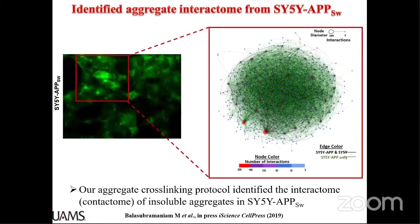Using these criteria, we modeled the graph aggregate interactome specifically for the model system. The graph shows the protein-protein interaction network of the SH-SY5Y APP system, where the green lines represent unique interactions present only in the SY5Y APP Swedish mutant — around 7,000 interactions specific to these amyloid-like aggregates.